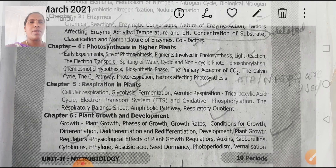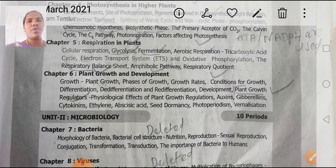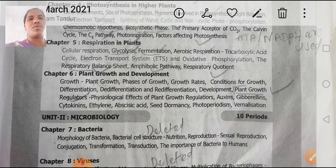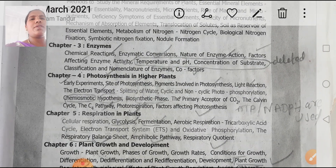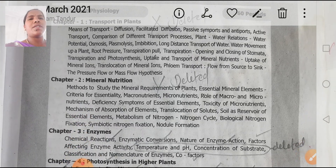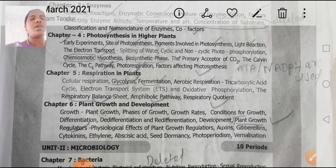Unit 1 is clear — you can go through the PDF in printed format. Chapter 6 is Plant Growth and Development. From this chapter, plant growth regulators are included. Unit 1, Plant Physiology, covers chapters 1 through 6, which are the foundation of this unit.